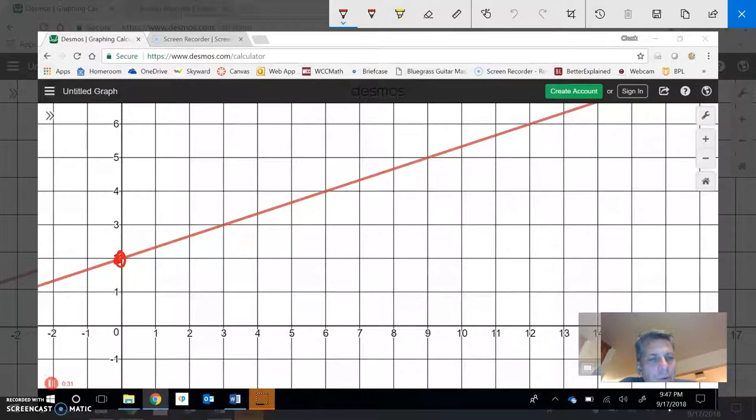So as I find this inverse, the inverse of this, what I'm going to do is just find some points on it. And notice that like this is the point 0, 2. This is the point 3, 3. This is the point 6, 4. This point right here is 9, 5.